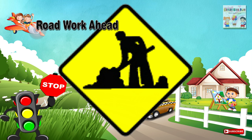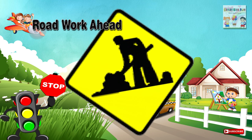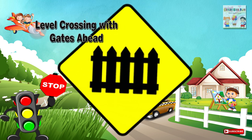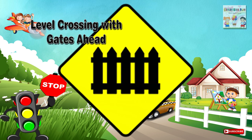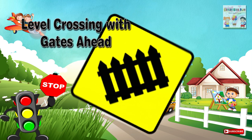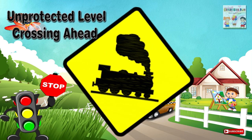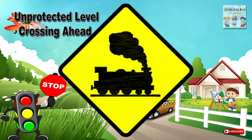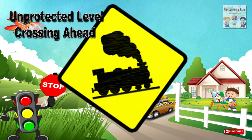Thirty-five: Road work ahead — a place on a road ahead where men are working on the carriageway and road works are in progress. Thirty-six: Level crossing with gates ahead — a railway level crossing protected by gates ahead. Thirty-seven: Unprotected level crossing ahead — an unprotected railway level crossing ahead.